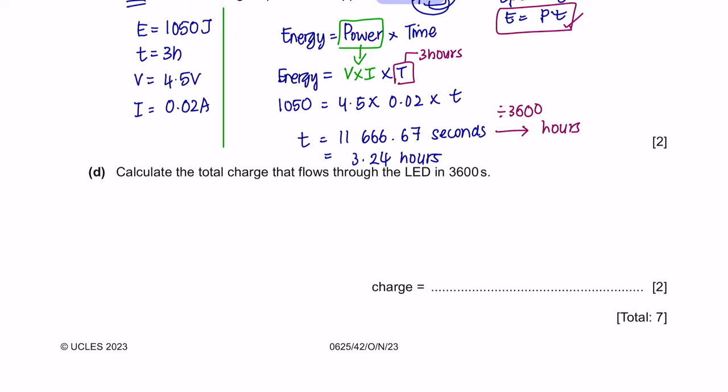Next, question D. Calculate the total charge that flows through the LED in 3,600 seconds. The formula to calculate charge is Q equals current times time. The current is 0.02 amperes and the time is already given. So the charge obtained here is 72 coulombs. Don't forget your units and your units for charge is coulomb.